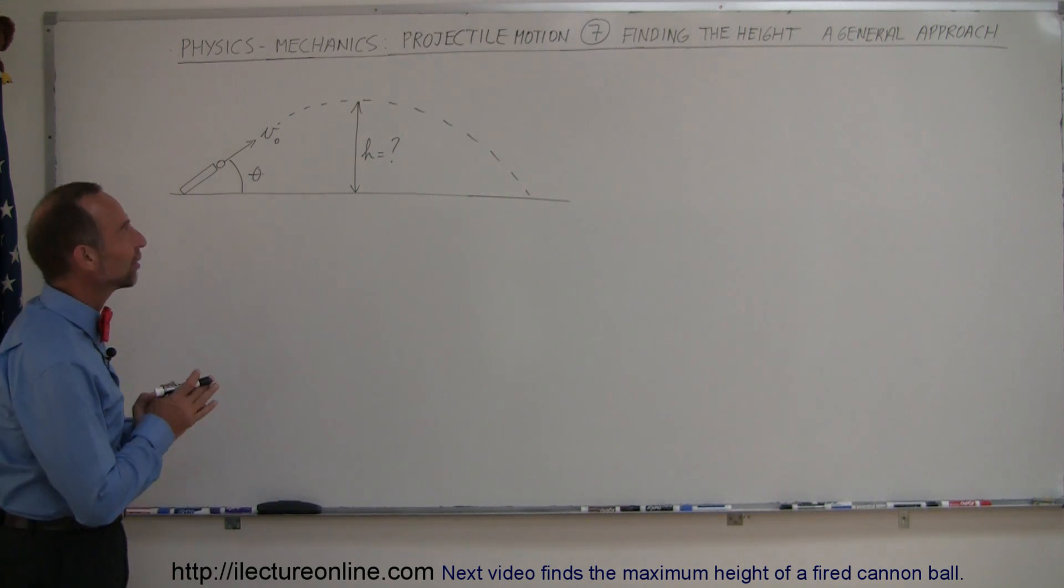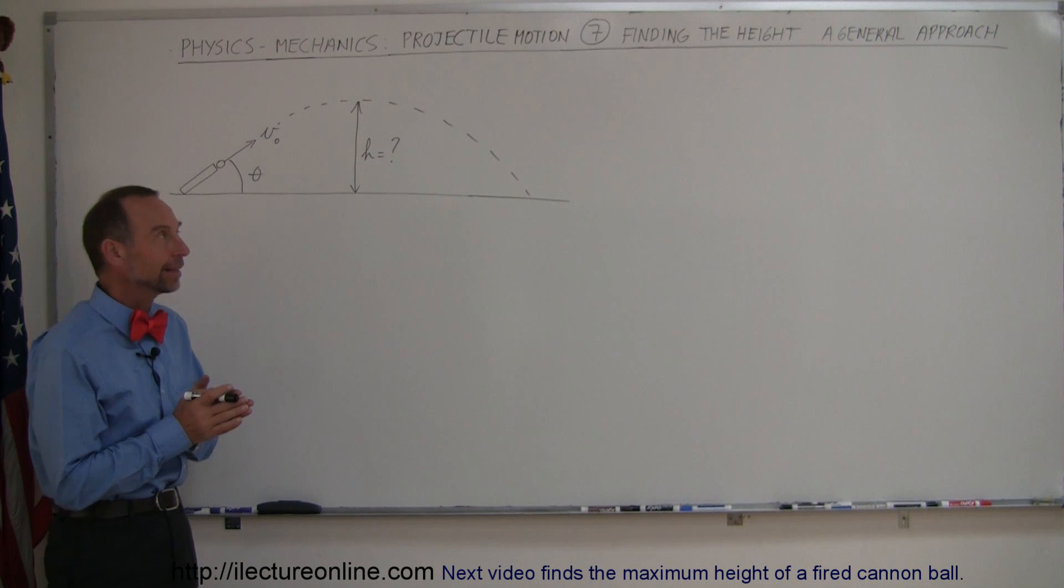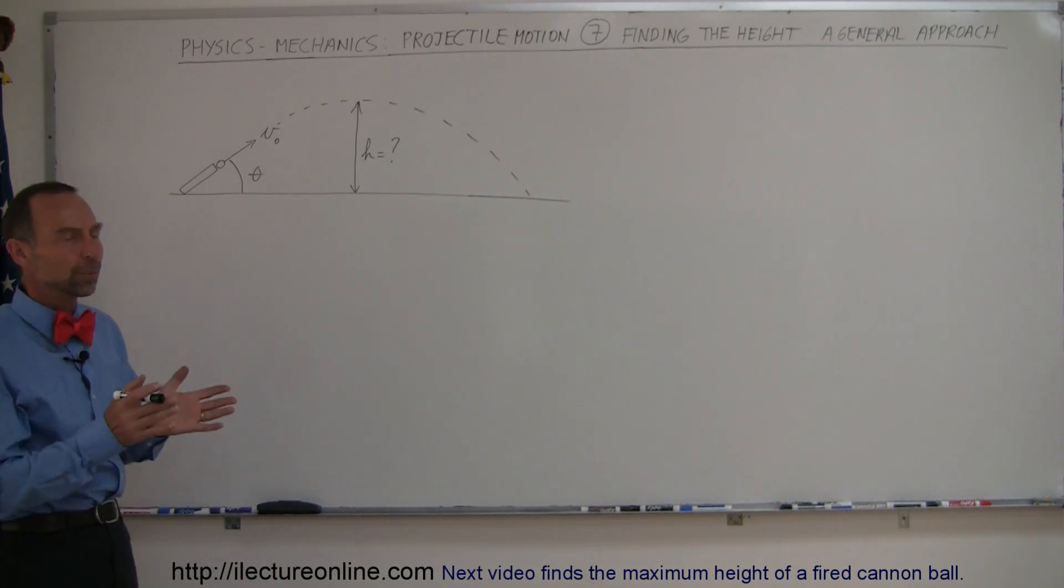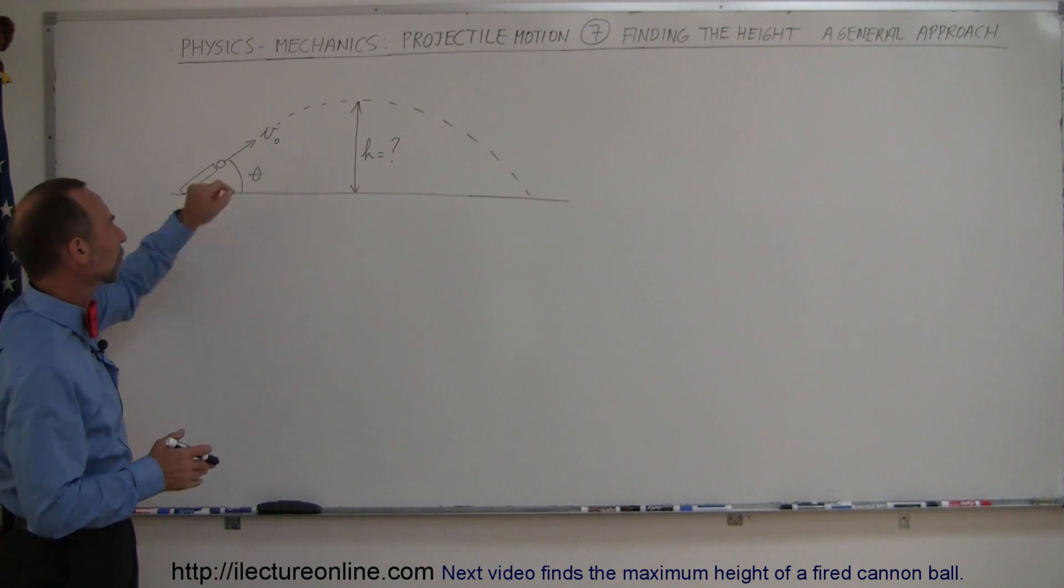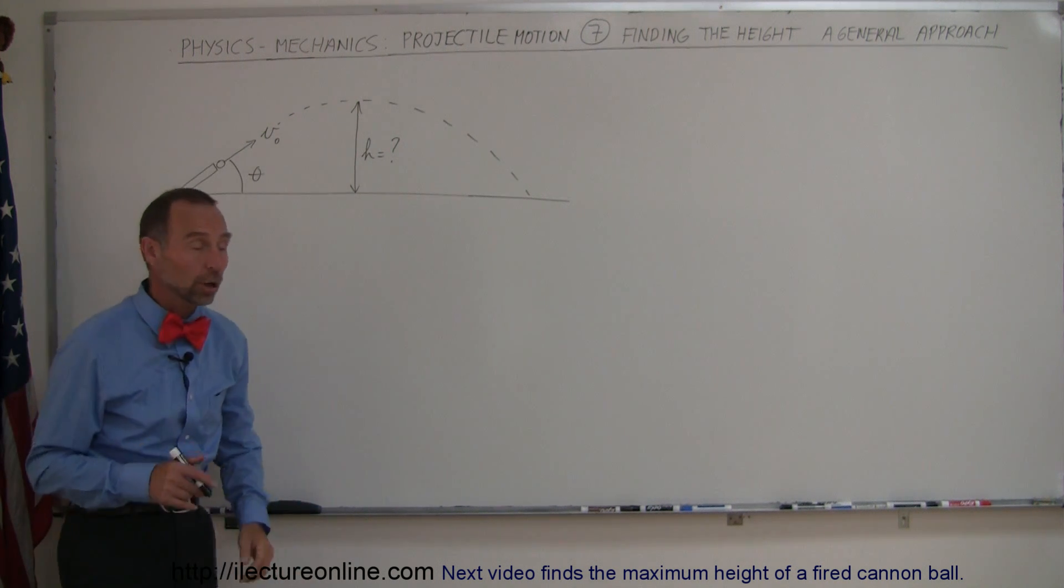Welcome to Electron Align and our next topic here in projectile motion is finding the height of the projectile, and we're going to do it in the general approach. So here we're simply shooting out a projectile at an angle theta with initial velocity v sub nought. How high will it go?